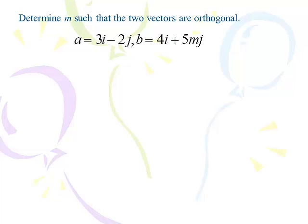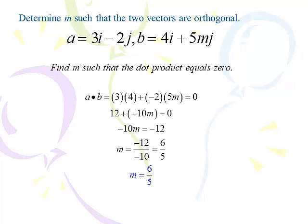Determine the value of m such that vectors (3, -2) and (4, 5m) are orthogonal. Set the dot product equal to zero and solve for m. So 3×4 + (-2)×5m = 0, giving 12 - 10m = 0. Subtract 12: -10m = -12. Divide by -10: m = 6/5. Check: substituting m = 6/5 gives a b-vector with 6j, and 12 + (-12) = 0. It works — make sure to check your answer, as it's easy to get -6/5 by mistake.